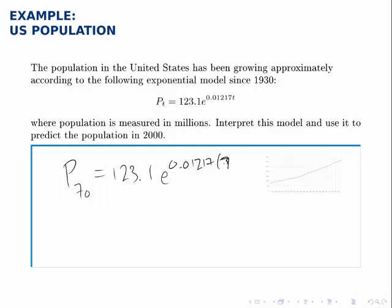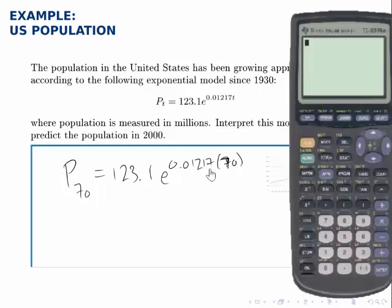Plugging in 70 for t, now all we need to do is calculate this right-hand side. I'll calculate the exponent first, 0.012177 times 70, and then I'll raise e to that power and then multiply that answer times 123.1.